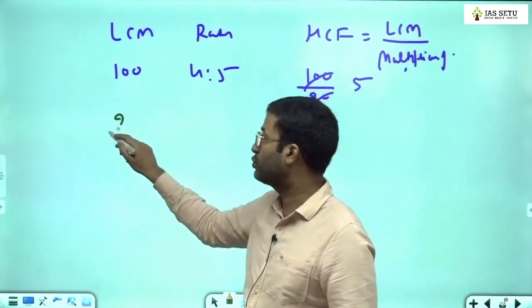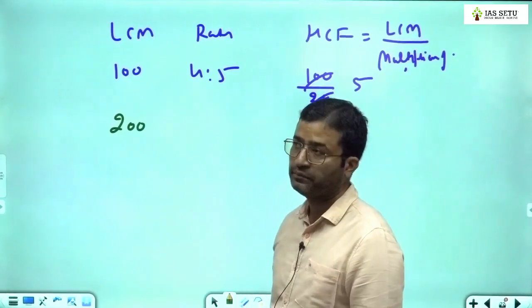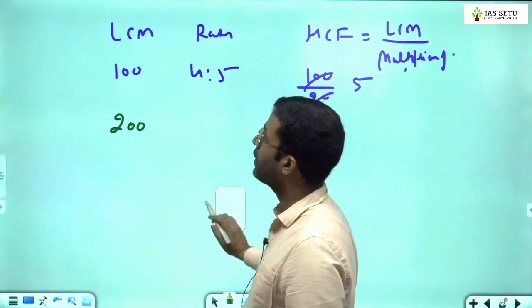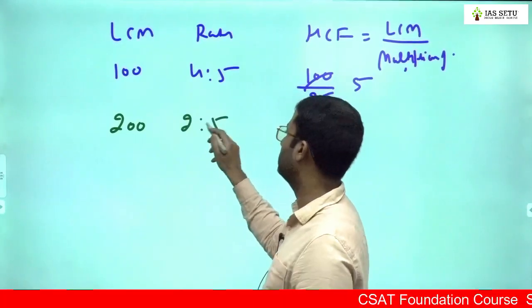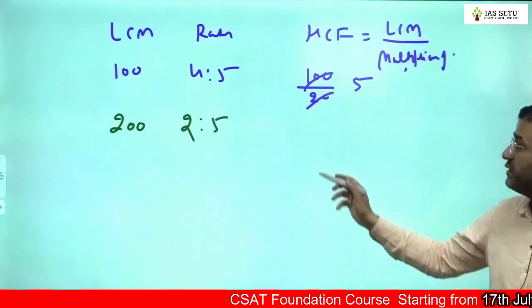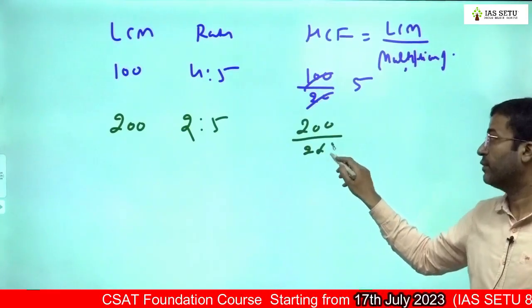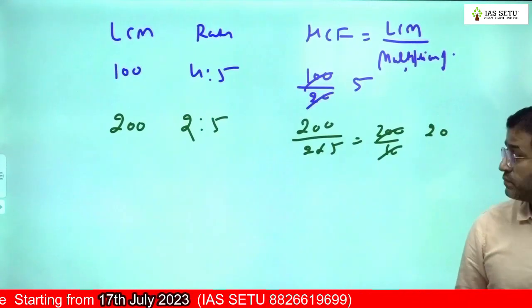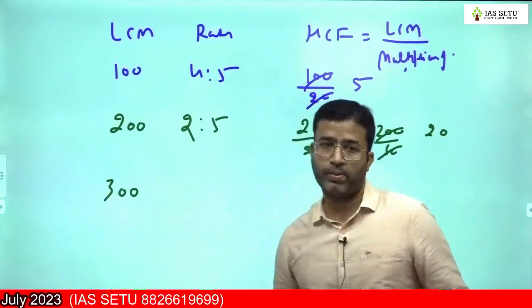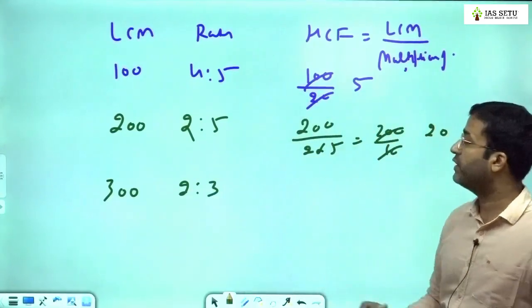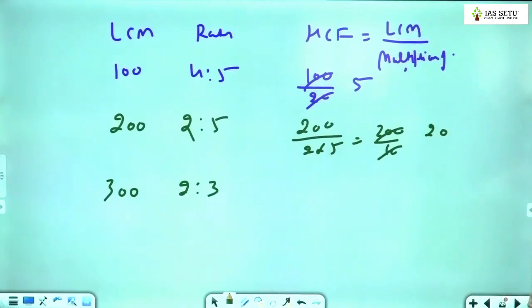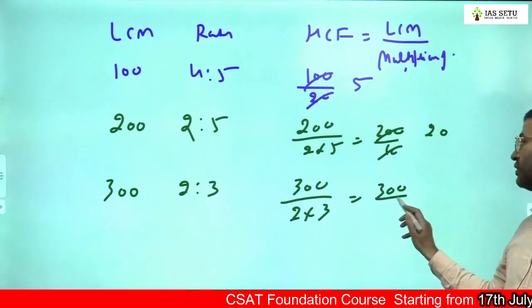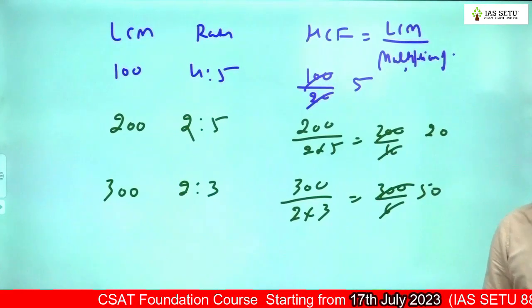Next question: if it is 200 and ratio is 2:3, can we find HCF? No, many possibilities. If it's 2:5, then what is the HCF? 200 ÷ (2×5) means 200 ÷ 10, it will be 20. One more question: LCM is 300, ratio is 2:3, can you find HCF? What is the answer? 50. 300 ÷ (2×3) = 300 ÷ 6 = 50.